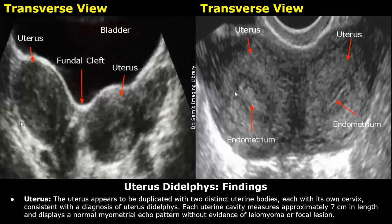These are the findings. Uterus: the uterus appears to be duplicated with two distinct uterine bodies, each with its own cervix, consistent with a diagnosis of uterus didelphys. Each uterine cavity measures approximately seven centimeters in length and displays a normal myometrial echo pattern without evidence of leiomyoma or focal lesion.